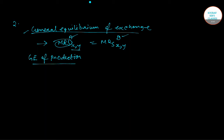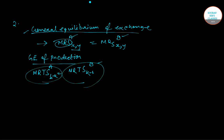For general equilibrium of production, the condition is when the marginal rate of technical substitution (MRTS) of one factor for another — say labor (L) for capital (K) — is the same for the production of both commodities X and Y. So MRS XY equals MRS XY for A and B, and MRTS LK and KL are the same for both commodities.